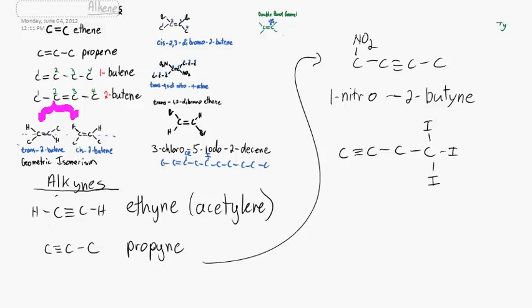Now, the triple bond always gets the lowest address. Don't worry about any side groups. Here, we have three iodos on the right-hand side, but they get carbon-4.